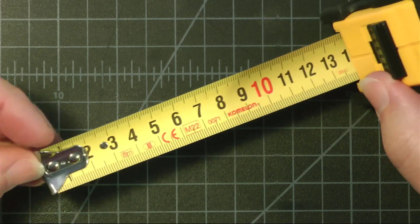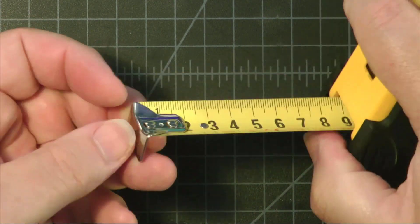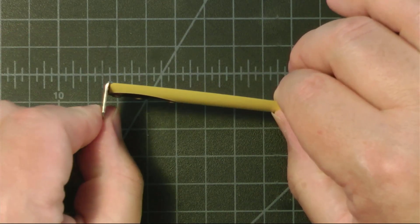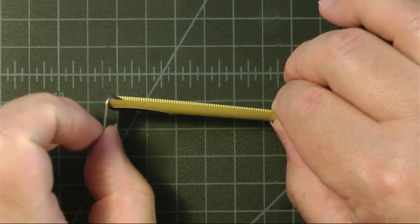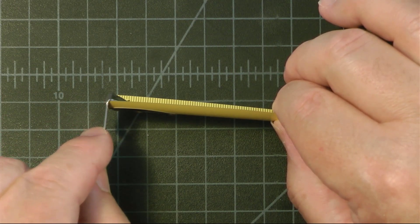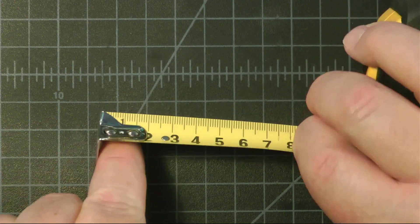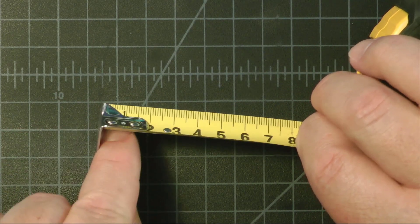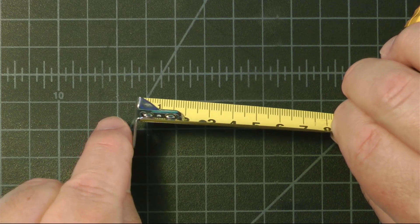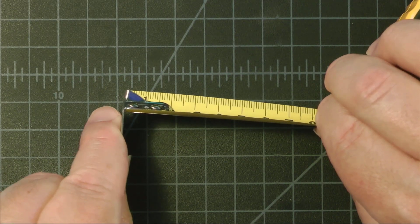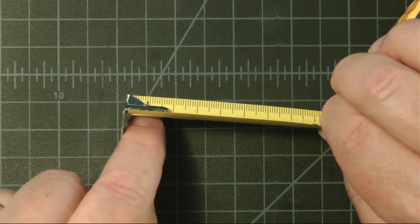I promised I would tell you why the hook was loose. It has to do with this piece of metal right here. This moves the same distance as this is thick. If you're measuring something on the outside, then the hook moves out. If you're measuring something on the inside, then the hook moves shorter. And this is always equal to this little piece of metal.